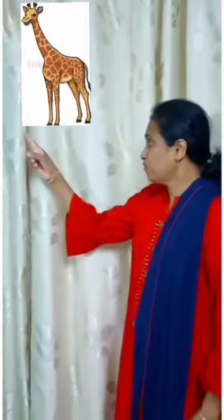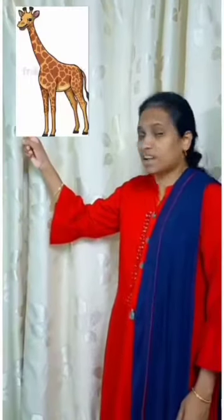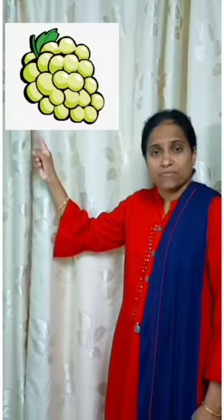Come on, dear children. Now we will do an activity. We will sing a song with the letter G. G for giraffe, G for girl, G for goat, G for grapes. Come on, we will repeat — G for giraffe, G for girl, G for goat, G for grapes.